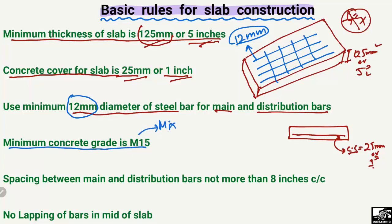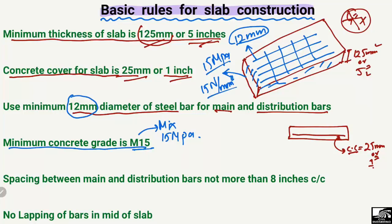The next rule is that the minimum concrete grade is 15 MPa, which means M15. Here 'M' stands for mix and '15' shows the grade of concrete in the unit of megapascals. So the minimum grade of concrete used in the construction of the slab should be at least 15 MPa or 15 N/mm², which is the same thing.